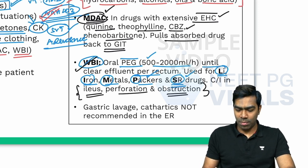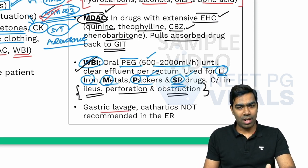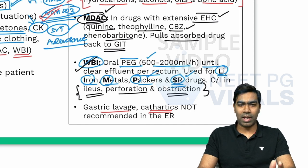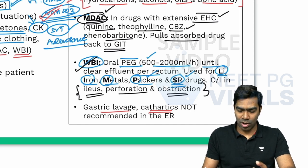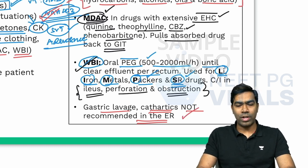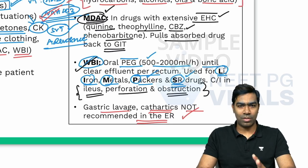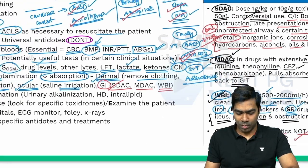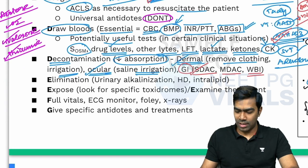Historically we have performed maneuvers like gastric lavage via Ryle's tube, administration of cathartics, and induced vomiting with drugs like ipecac syrup. These maneuvers are no longer currently recommended in the emergency room because, as per current research, they do more harm than good. So avoid all of these.